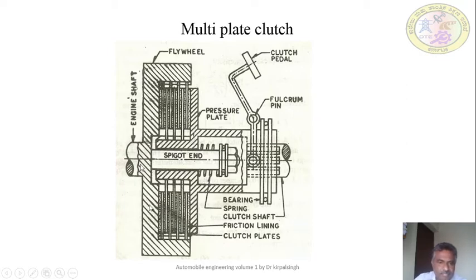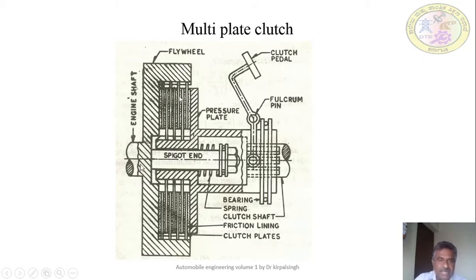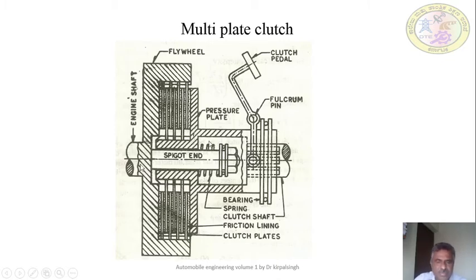One set of plates rotates with the flywheel. The other set of plates, placed alternately — one pressure plate, one friction plate — are mounted on the hub. These plates are free to slide axially but rotate with their corresponding member. When the clutch is engaged, the entire assembly is held together by the clutch spring axial force, and the clutch is said to be in an engaged position. There is also a release mechanism consisting of a pedal, bearing, etc.